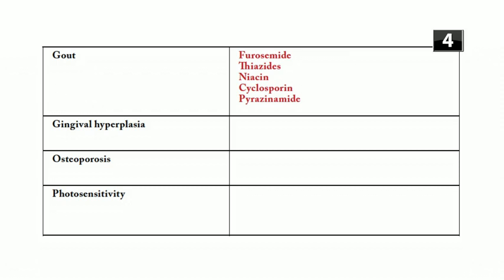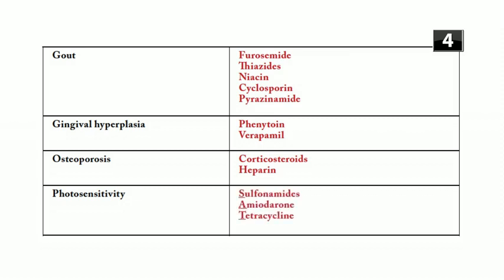Gingival hyperplasia: classically associated with phenytoin; verapamil can also cause it. Osteoporosis: think corticosteroids and heparin — patients on corticosteroids for at least three months should receive prophylactic bisphosphonates. Photosensitivity: sulfonamides, amiodarone, and tetracycline — remember the mnemonic SAT for photosensitivity.